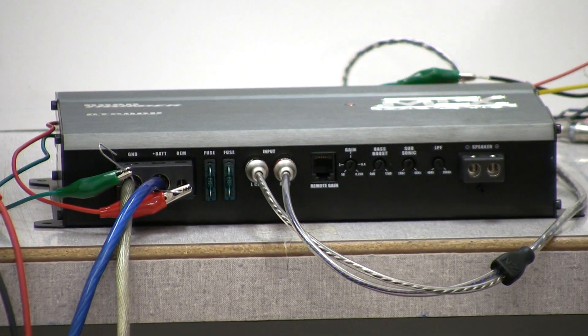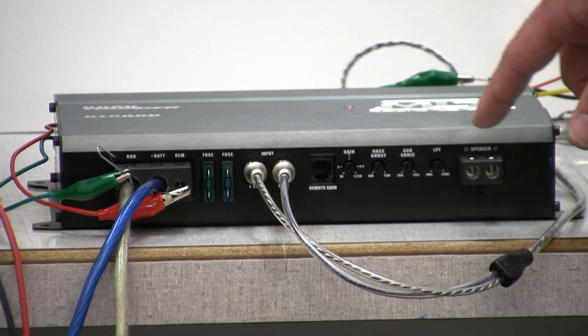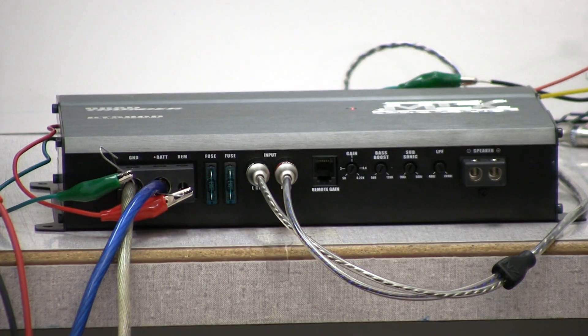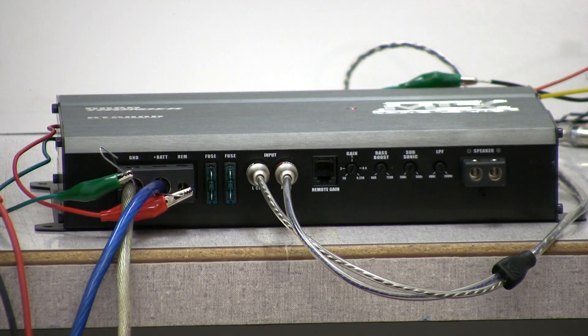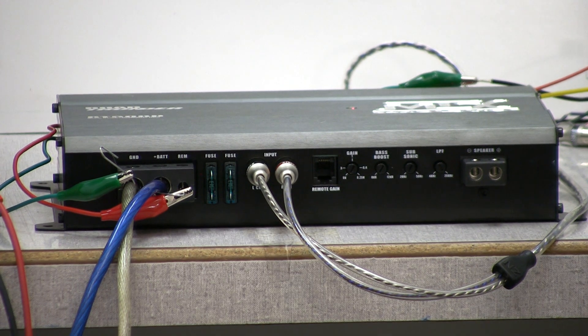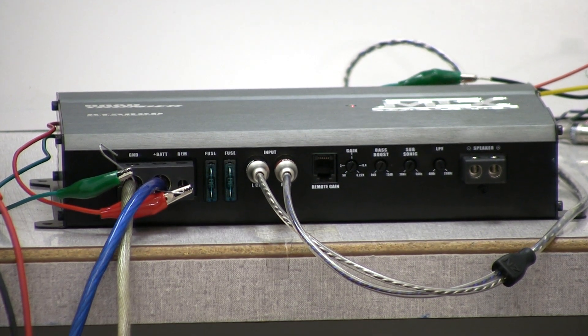We're going to turn the gain all the way down, bass boost all the way down, subsonic all the way down and the low pass filter all the way up. This is going to give us the widest bandwidth of our amplifier possible so that we know we're appropriately setting the gain before we add the feature set in.